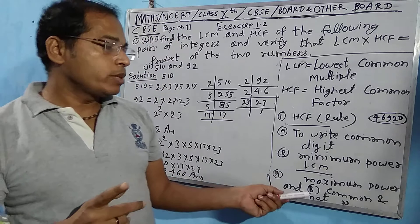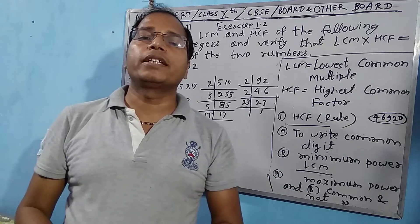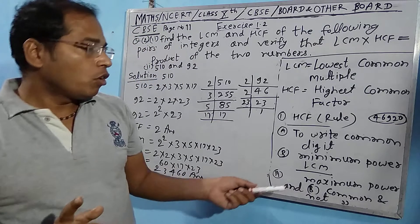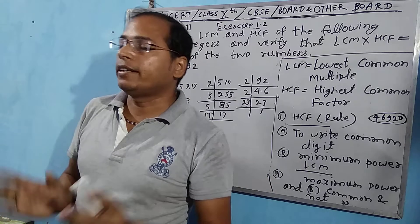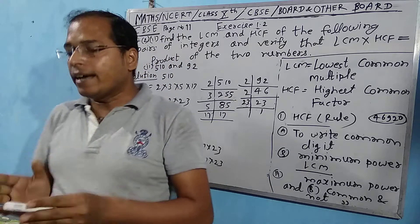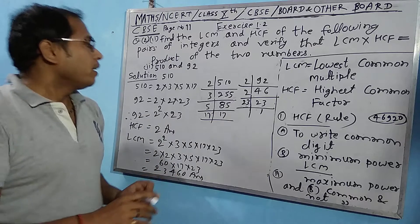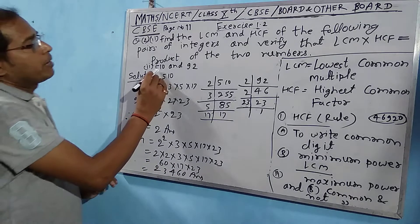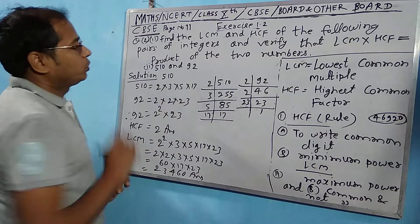The rule for LCM is that whichever digit is common, we write it, and whichever digit is not common, we also write it. For LCM, we always take the maximum power of common factors, and we include all factors whether common or not.